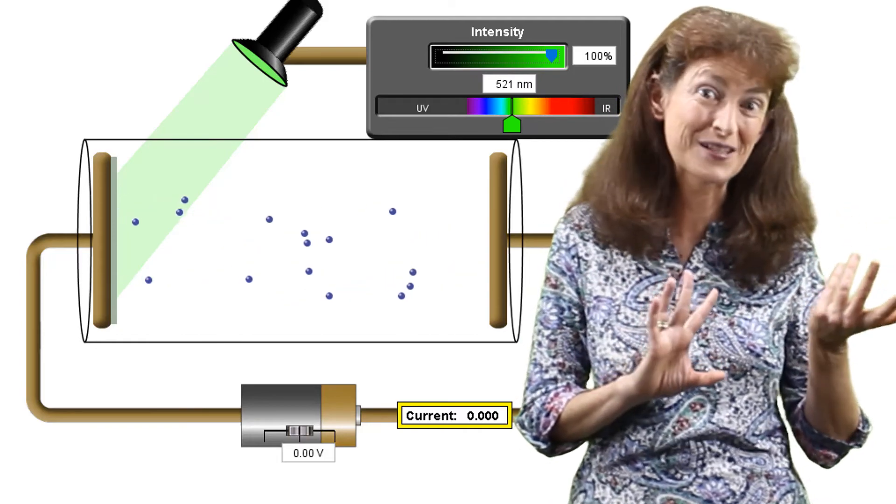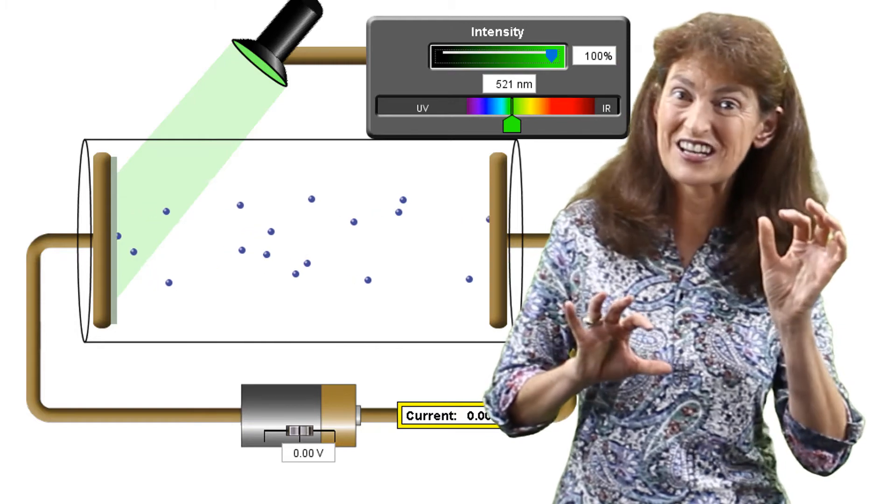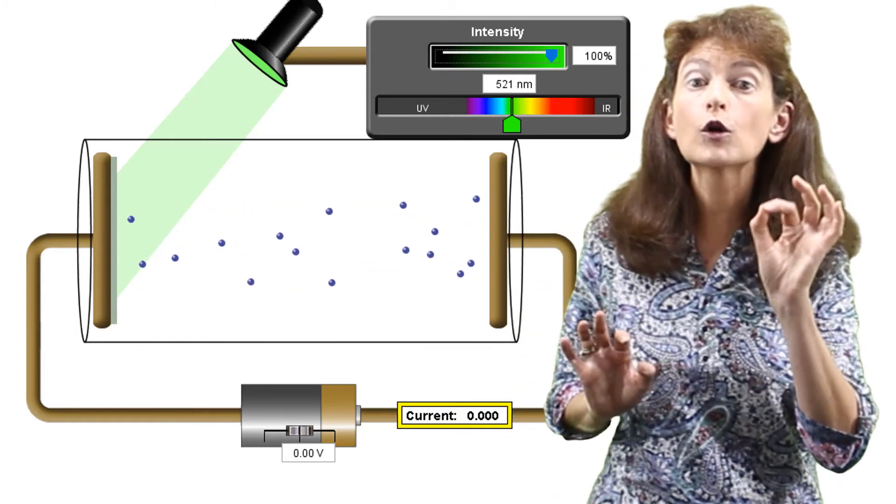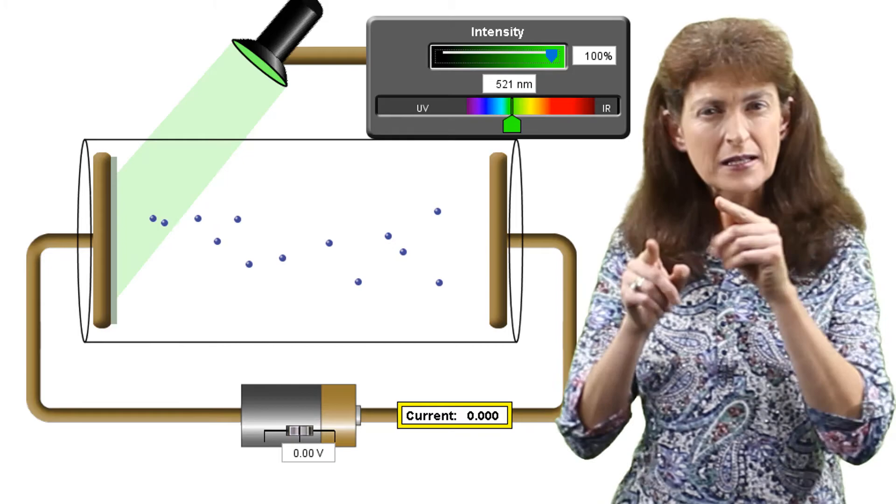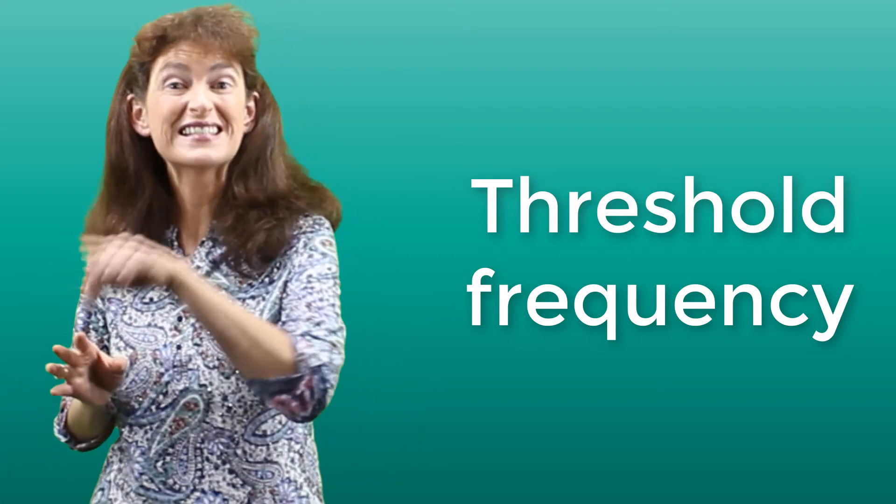In this case our simulation. If we're really doing it in a laboratory we stop changing the frequency of our light. And we record the frequency that was at the threshold at the break between no emission and now from that point onward we get emission. And that is the threshold frequency for that particular metal.